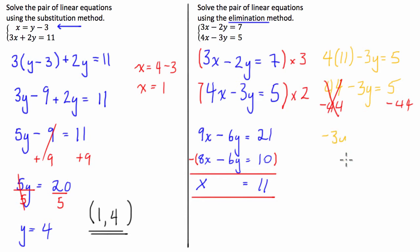We're left with negative 3y equals 5 take 44 is negative 39. Divided by negative 3, divided by negative 3 is just 13.